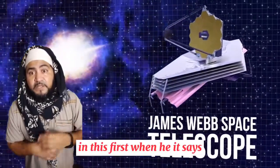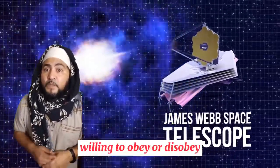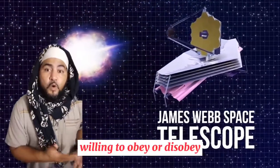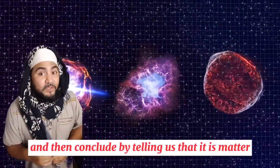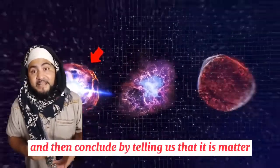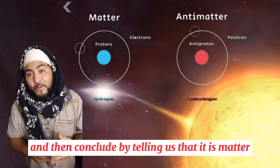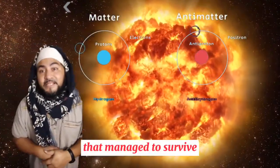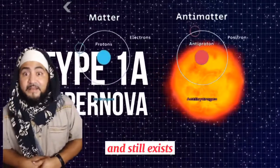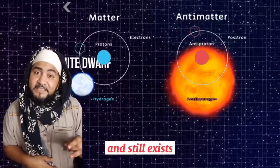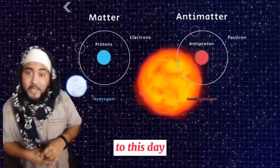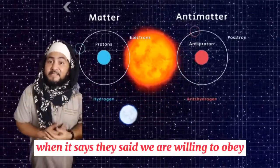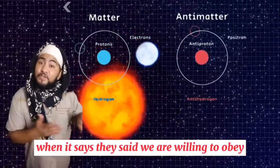The Quran even alludes to the matter and antimatter that existed in the universe in this verse when it says willing to obey or disobey, and then concludes by telling us that it is matter, not antimatter, that managed to survive and still exists to this day when it says they said we are willing to obey.